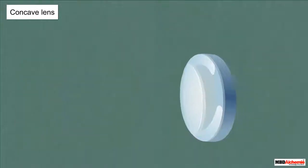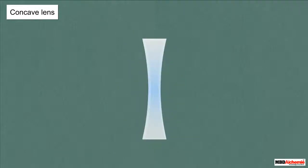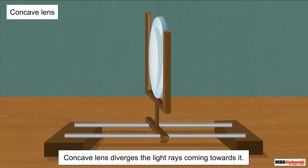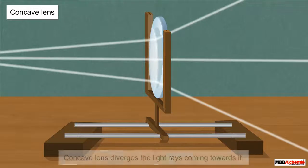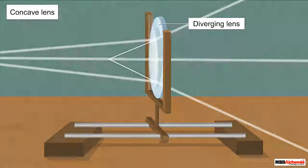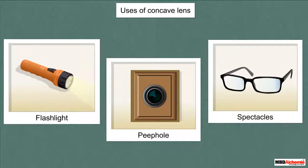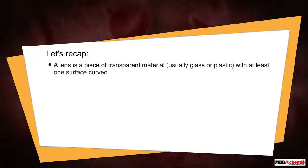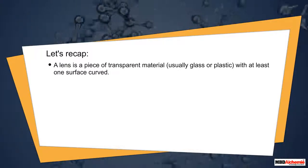Take a look at the concave lens. This lens has its surface curved inwards — it is thinner in the middle and thicker at the edges. This lens diverges the light rays, spreading them as they come towards it, and forms an image. Hence, a concave lens is also called a diverging lens. This type of lens is used in flashlights and some spectacles.